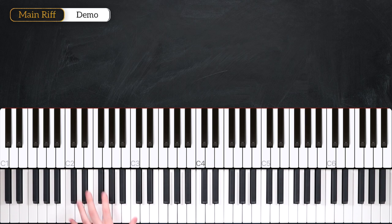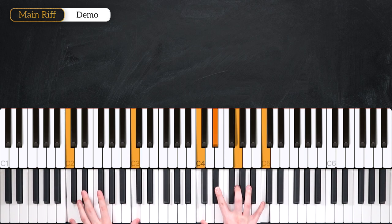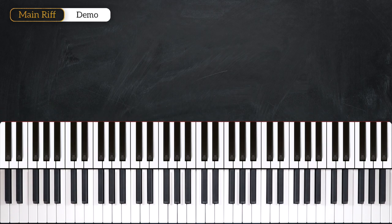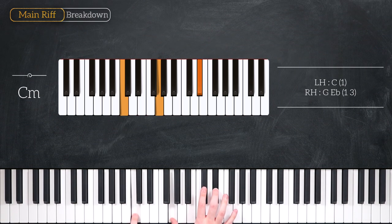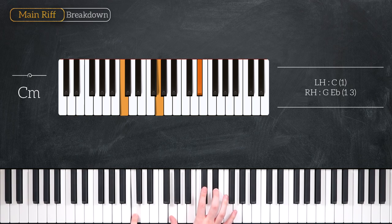We're in the key of C minor. And we have three main chords. Our first chord is going to be a C minor chord. That's a C in the left hand, a G and an Eb in the right hand.